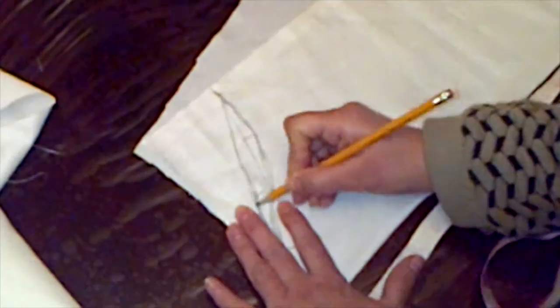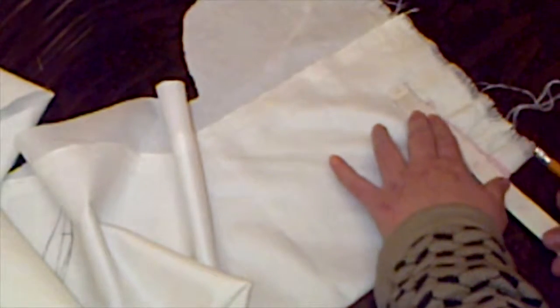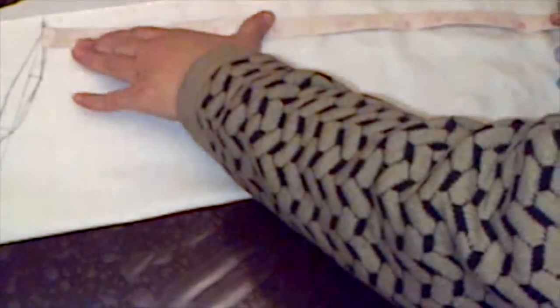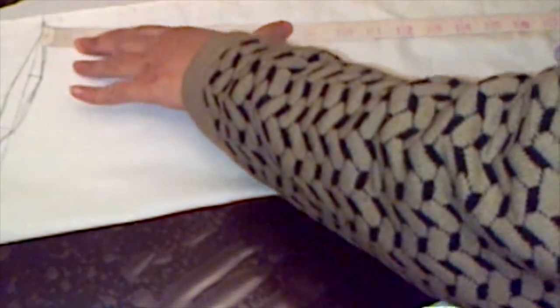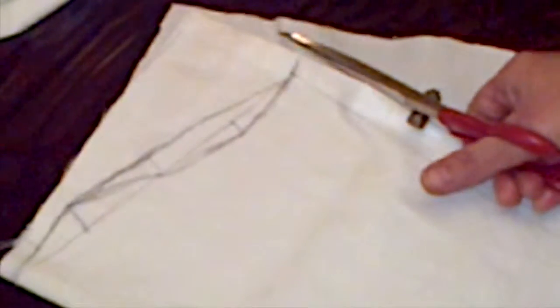This is how it would look. Now measure the opening of the sleeve that you need, mark it, and join this point to the armhole point. Draw a line, leave some space for the seam, and then cut accordingly.